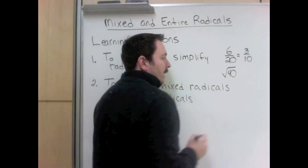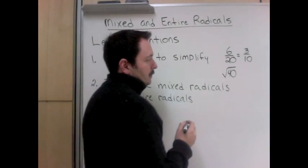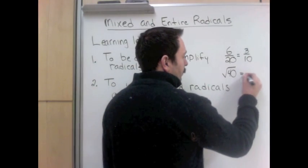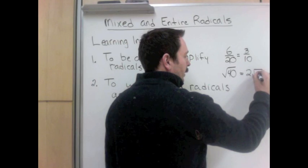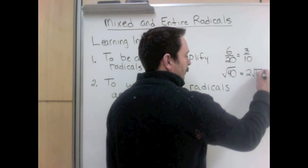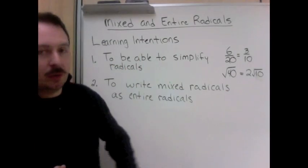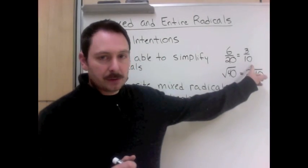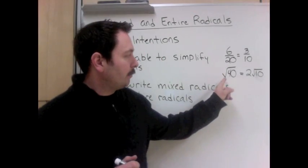An example we'll do today, we'll look at the square root of 40 and we'll work it down into some smaller numbers and it will be 2 times the square root of 10. So we're taking larger numbers and making them smaller when we simplify the fractions, and we're doing the same thing when we simplify radicals.